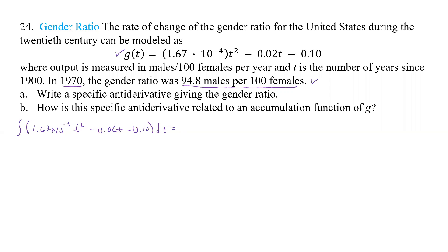t squared minus 0.02t minus 0.10dt. All right, so if we take that integral, I'm not going to worry about that. I'm just going to rewrite that. 1.67 times 10 to the negative 4t. Now that goes up by 1, so it's cubed.